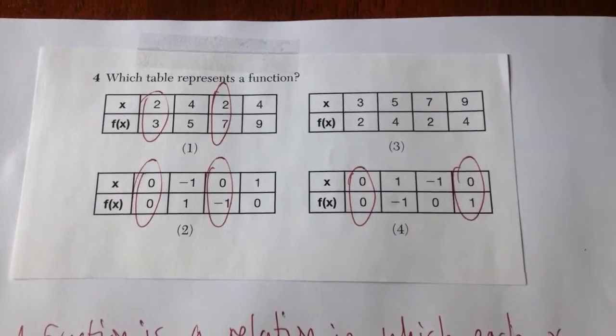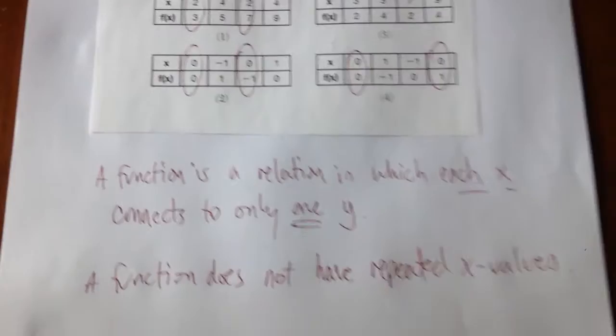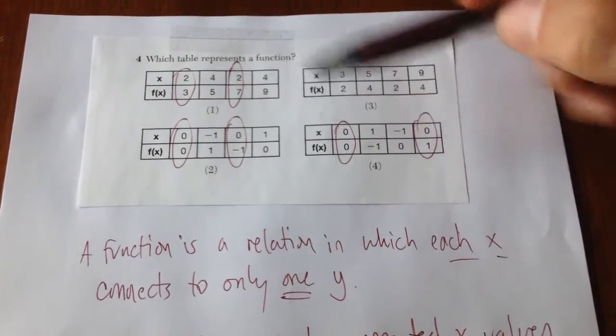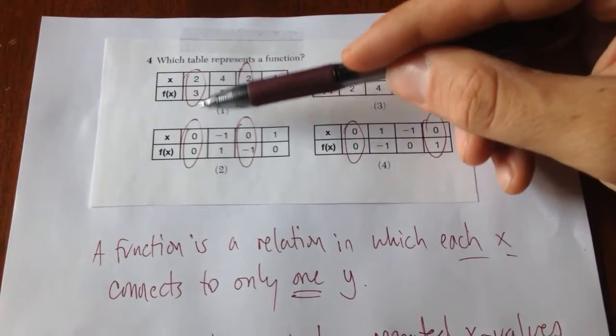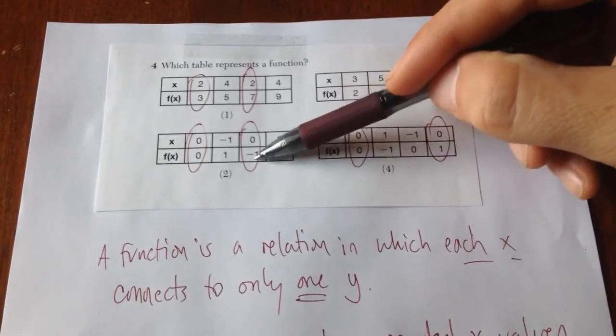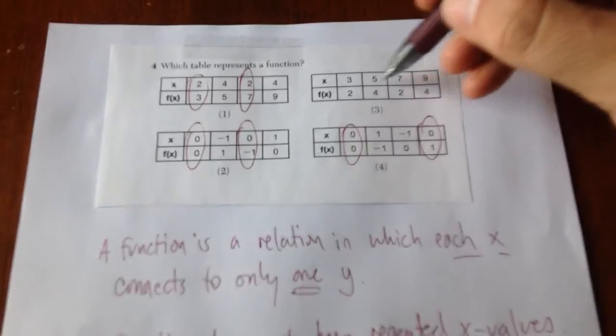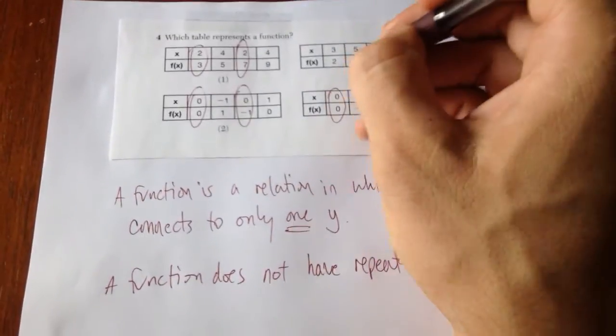Number four asks you which table represents a function. Remember a function is a relation in which each x connects to only one y. If you look in these charts here, notice how two, the x value two, has two pairings. And this one, zero has two different pairings. Zero has two different pairings. Number three is the only one that does not have repeated x values in its table. It's choice three.